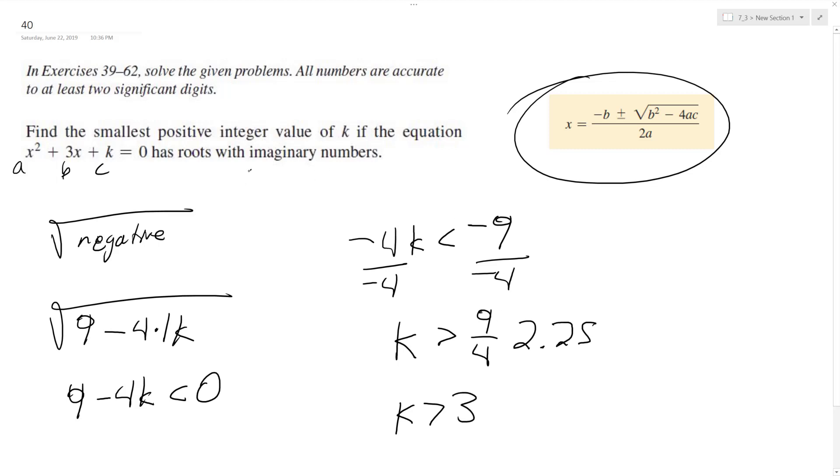So k equals 3, and this essentially becomes x squared plus 3x plus 3. Or it doesn't have to be greater than 3, but it needs to be greater than 2.25, so the answer is k equals 3.